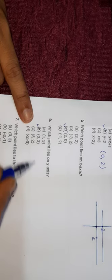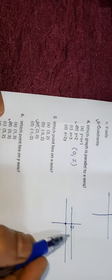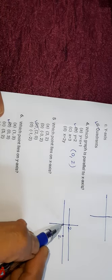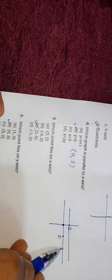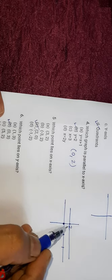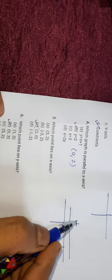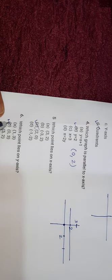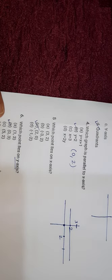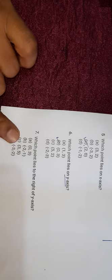Question number six: which point lies on the y-axis? The answer is (0, 3). The point (0, 3) — x is 0 and y is 3 — lies on the y-axis.